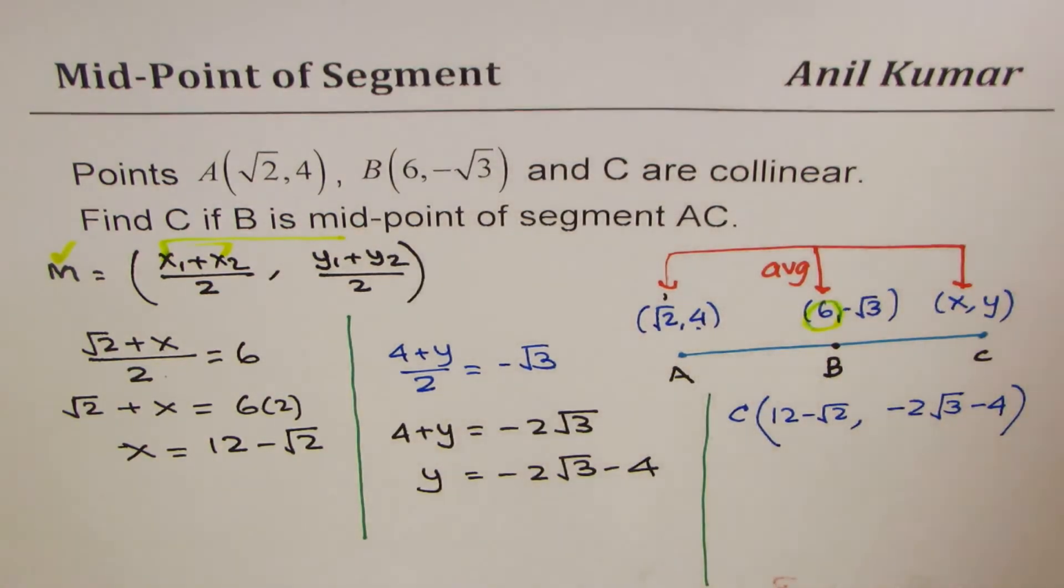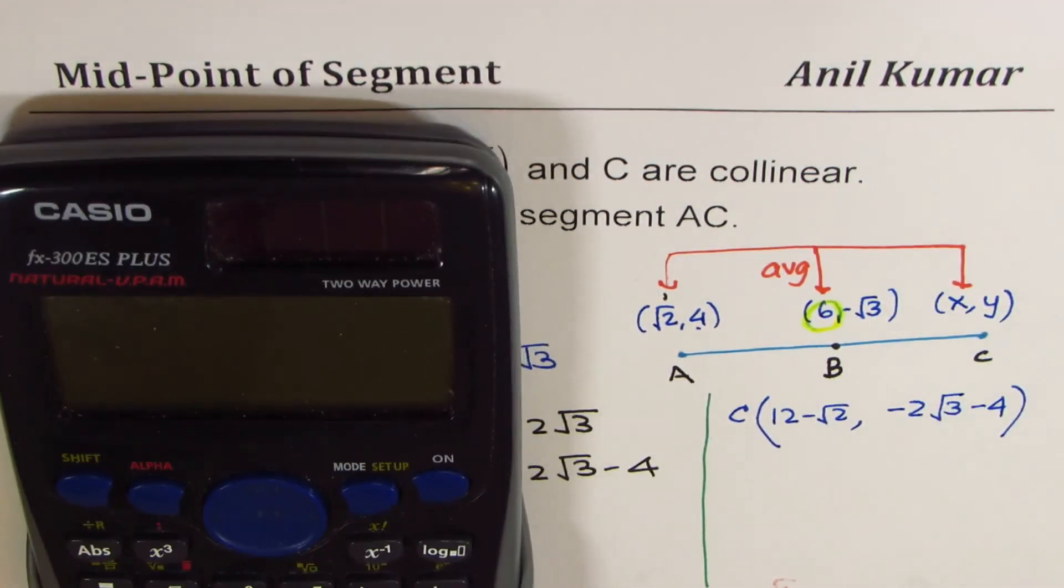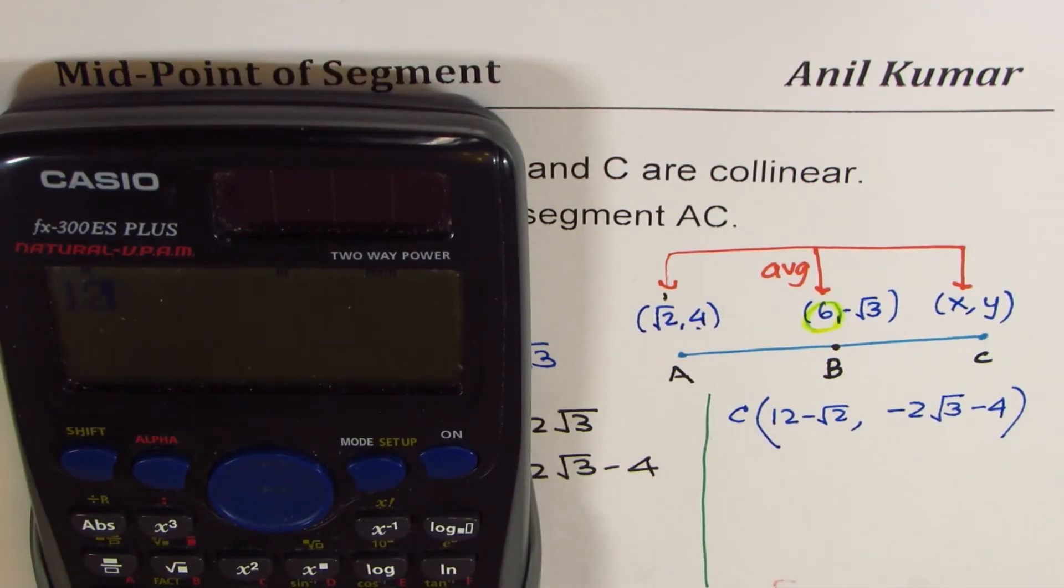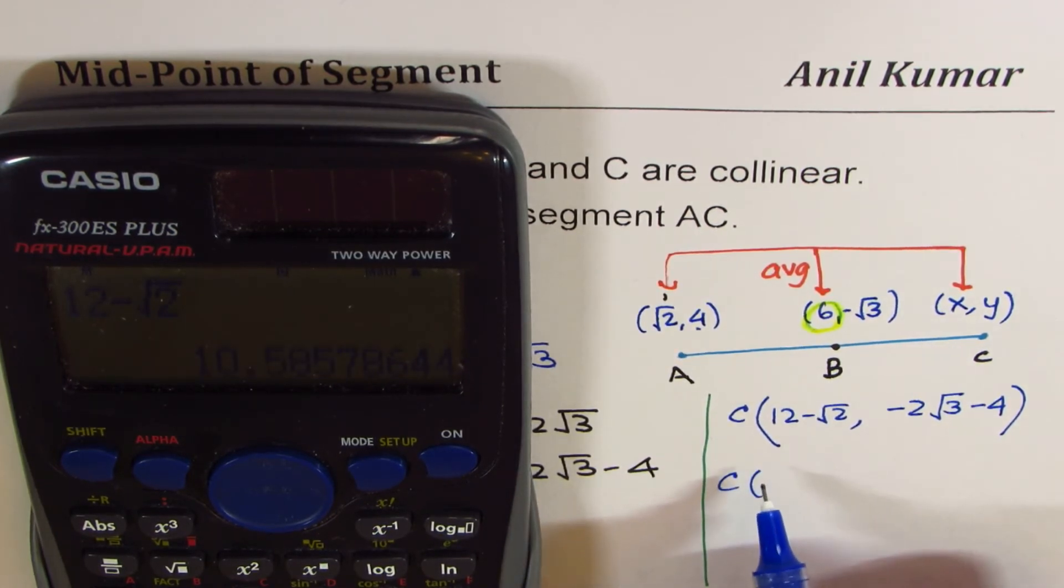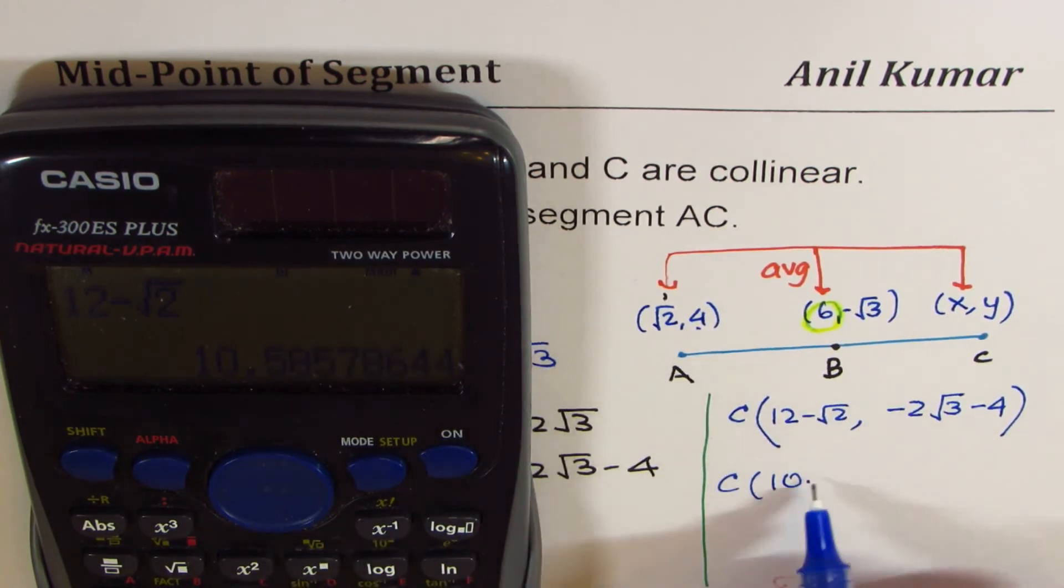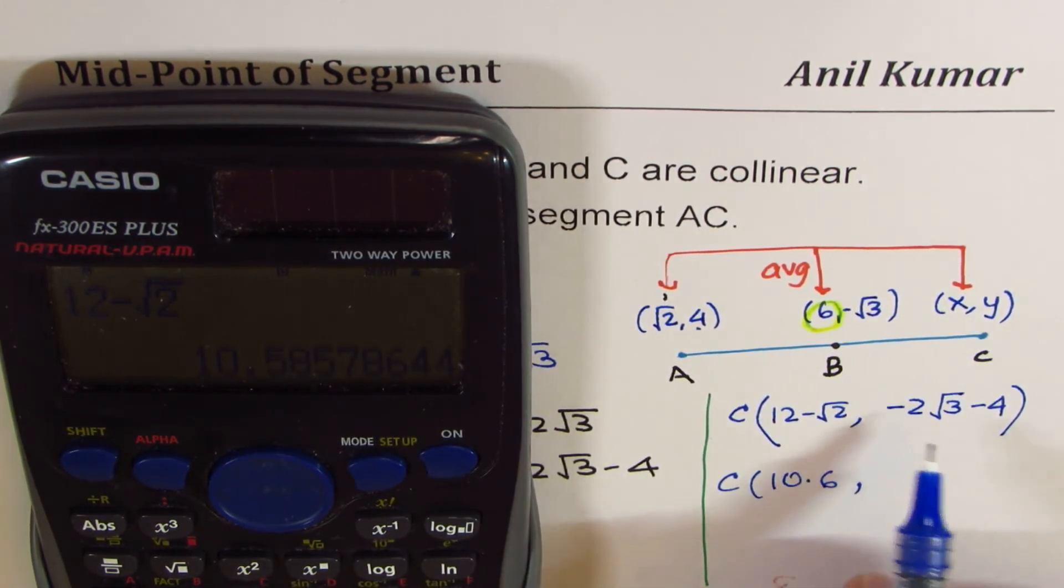If you want decimal equivalent, you can always use the calculator. So we do 12 - √2 equals, in decimals... and you can round this to one decimal place. It is 10.58, I'll make it 10.6.